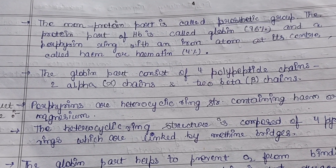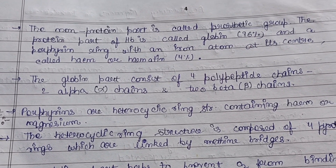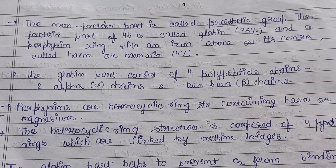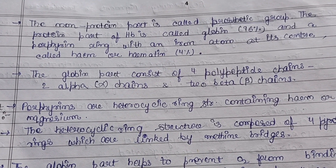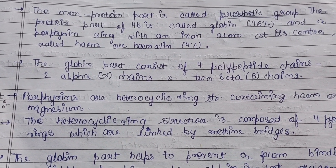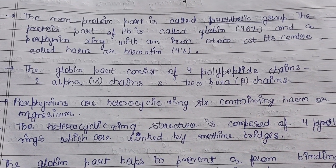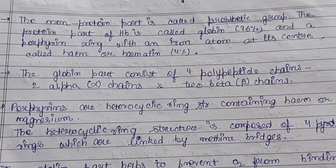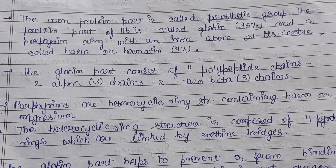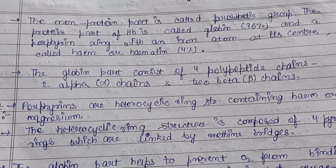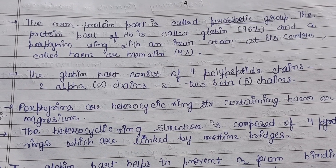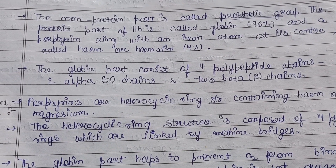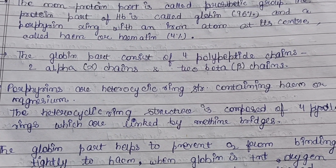Regarding hemoglobin's structure: the non-protein part is called the prosthetic group — the part where protein is absent. The protein part of hemoglobin is called globin, which makes up 96% of the molecule. The remaining 4% is the heme (or hematin) part, which consists of porphyrin rings with an iron atom at the center — the iron atom is surrounded by these porphyrin rings.